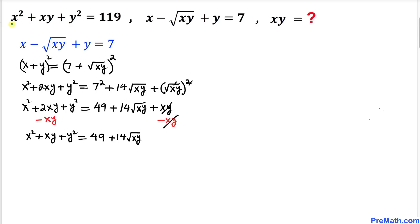Now let's focus on the very first equation: x squared plus x·y plus y squared equals 119. We have exactly that same expression on the left hand side, so we can replace it with 119.